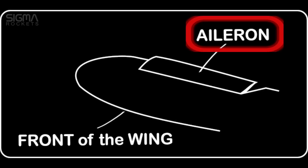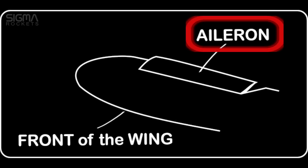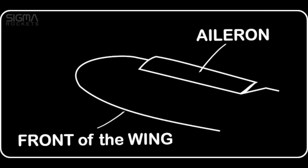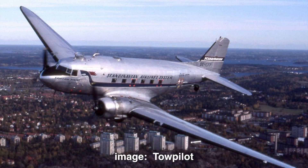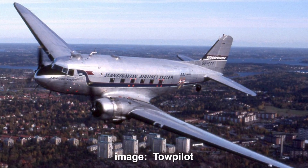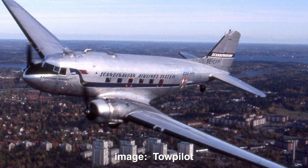Ailerons on the wings of an airplane move up and down, resulting in a change in the amount of lift the wing provides. By moving the ailerons in opposite directions, the plane will bank one way or another, allowing the pilot to turn the plane in flight.